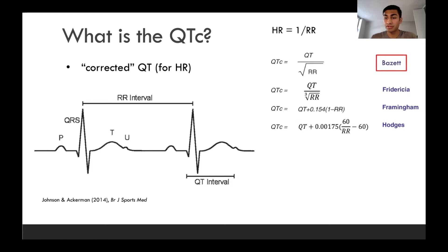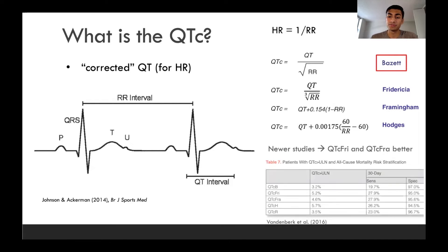There are also some other formulas used, the Fridericia, Framingham, and Hodges, a bit more complicated, but sometimes used. Newer studies, though, have pointed out that maybe this Fridericia and Framingham might potentially be better. And that's because at the 30-day sensitivity, right here, QTC-Fry and QTC-Fra, there are a bit better sensitivity. So that's still up for debate, but one important thing to keep in mind.